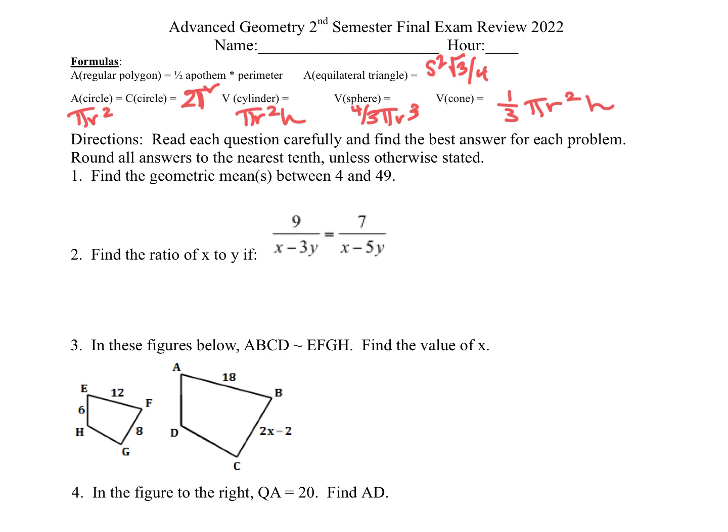So our first question is asking about geometric mean. Geometric mean is when we do a mean proportion, but the means are the same. So we want this number and this number to be the same, and this is a 4 and this is a 49. So we would cross multiply and get X squared is equal to 4 times 49, which is 196. When we take the square root of 196 and the square root of X squared, we get X is equal to plus or minus 14.